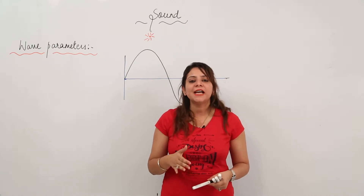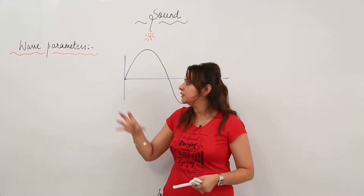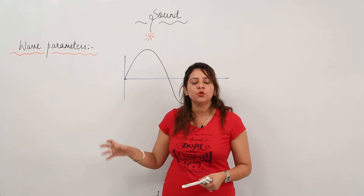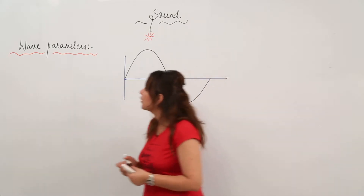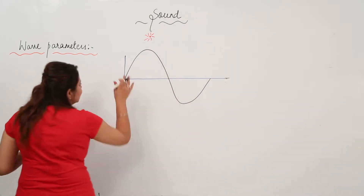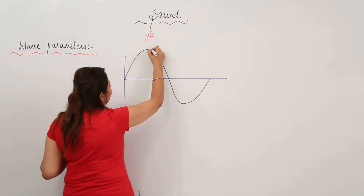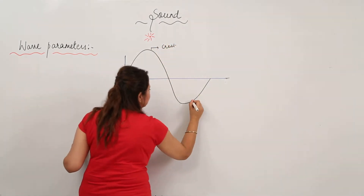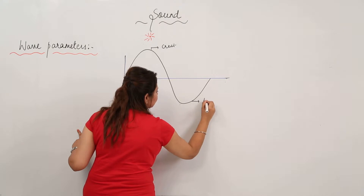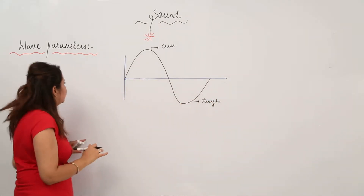Now we are going to start with wave parameters — certain quantities which can actually describe the wave completely. This is a wave; I have shown you a transverse wave. As you know, this is a crest and this is a trough. We can actually have many information related to the wave.